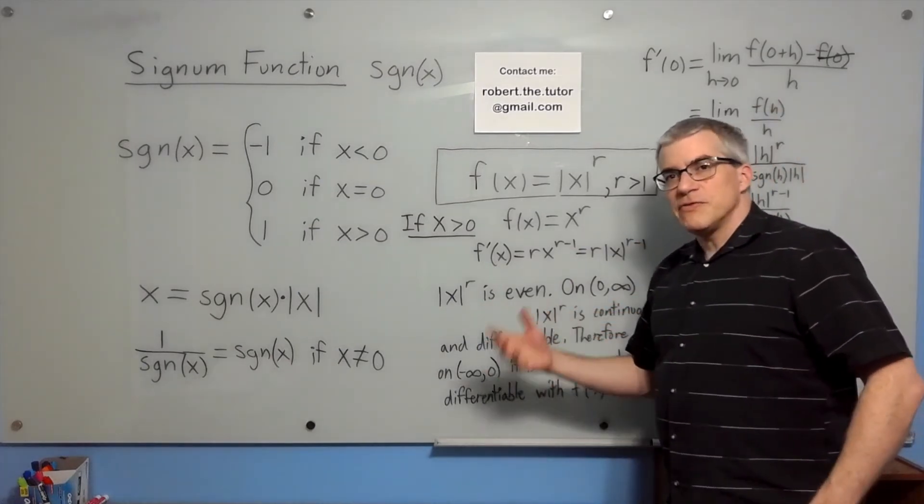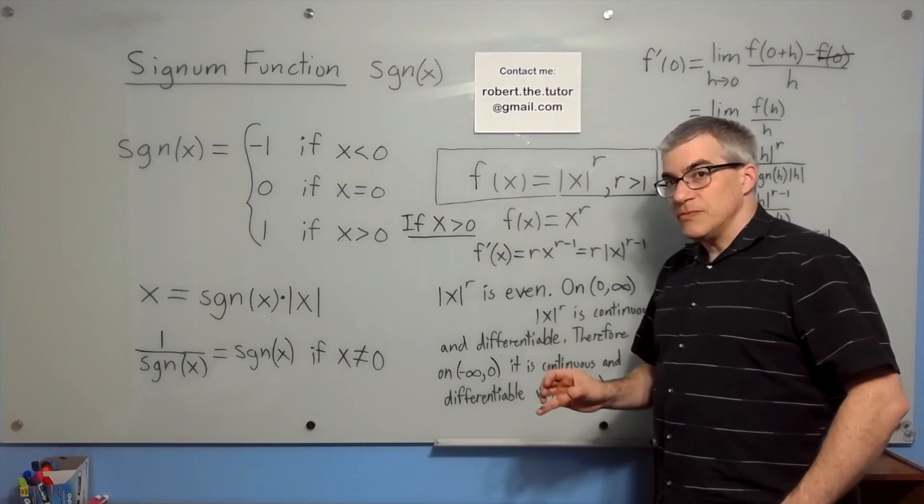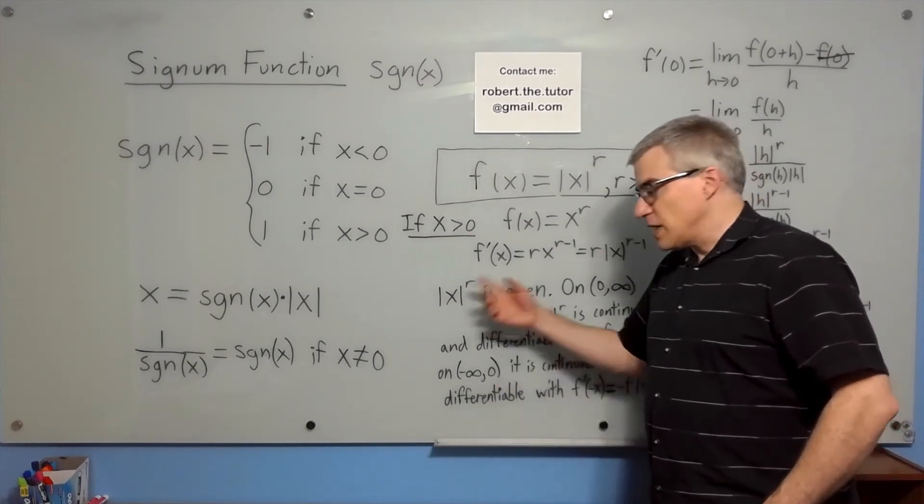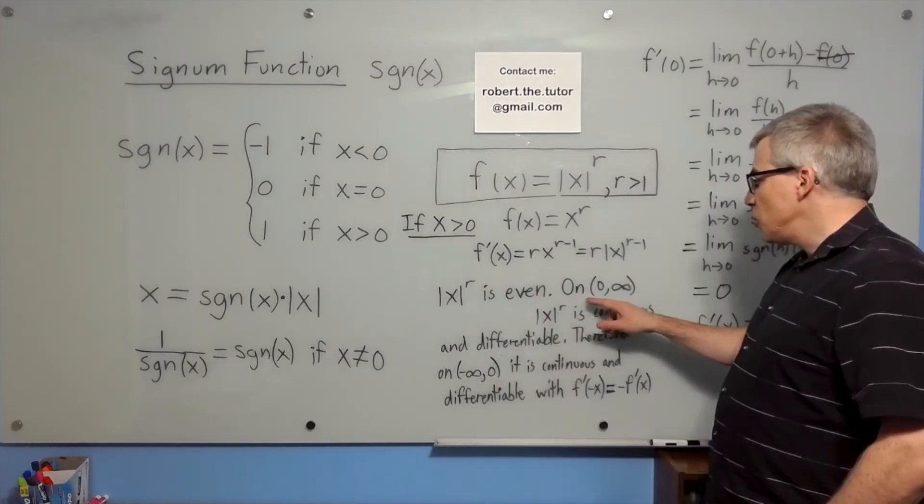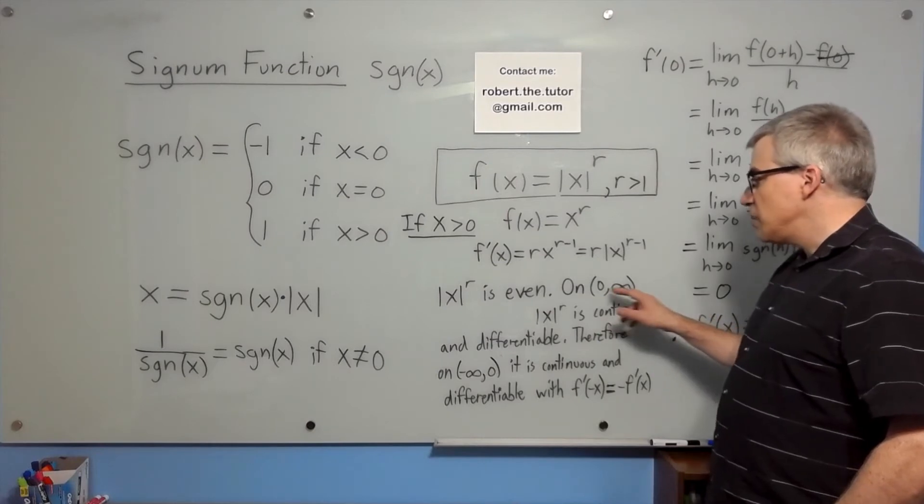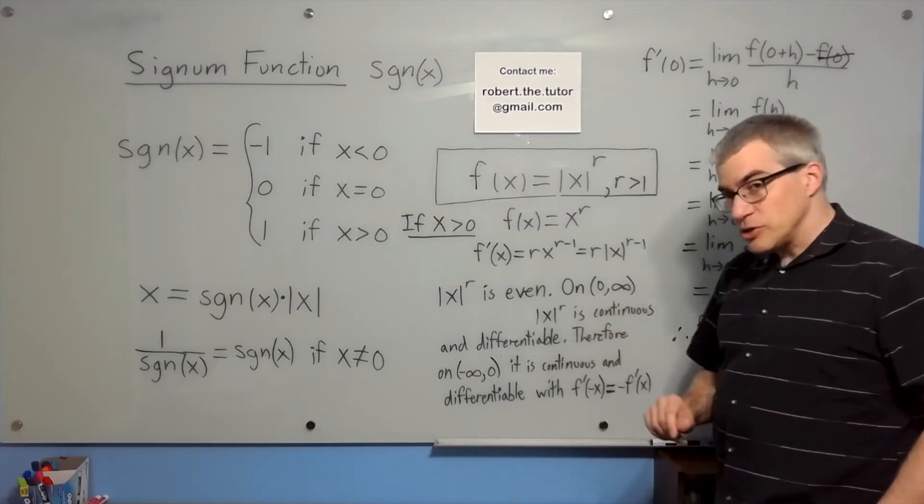Absolute value of x to the r is an even function, because absolute value of x is even. If you plug in x or negative x, you're always going to get the same thing. On the open interval from zero to infinity, this function is continuous and differentiable, and it's even.